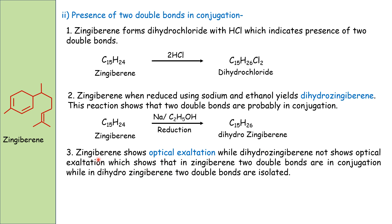Further evidence for conjugation: gingivirine shows optical exaltation (increased refractive index), while dihydrogingivirine does not. This is because in gingivirine the two double bonds are conjugated, whereas in dihydrogingivirine, after hydrogen addition, the double bonds are in isolated positions, so optical exaltation is absent.